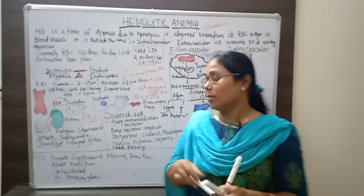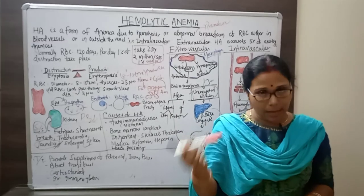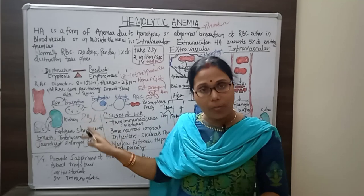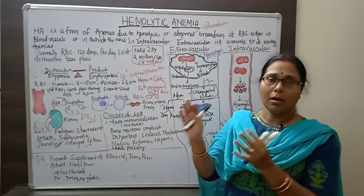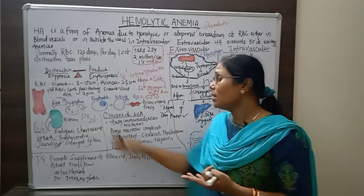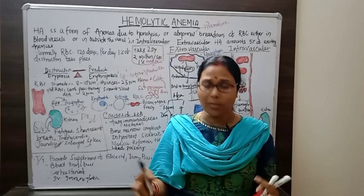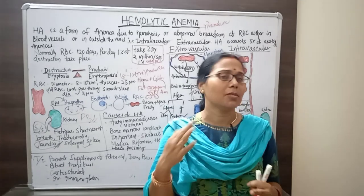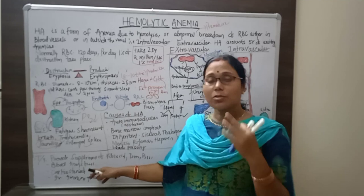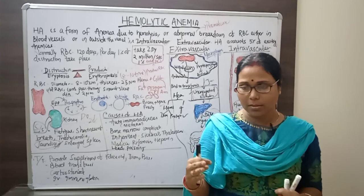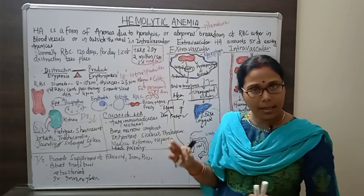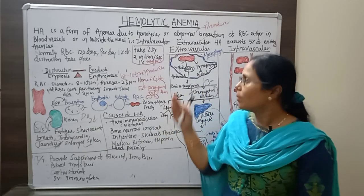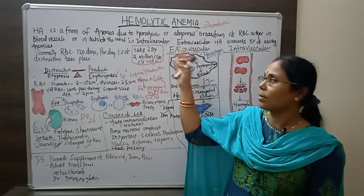Treatment of hemolytic anemia includes: first, supplementation of iron, folic acid, and vitamin B complex, as these are essential for RBC formation in the bone marrow. Second, blood transfusion in severe or chronic cases. Third, corticosteroids, which are commonly used drugs in hemolytic anemia. Intravenous immunoglobulin may also be administered to patients suffering from hemolytic anemia.